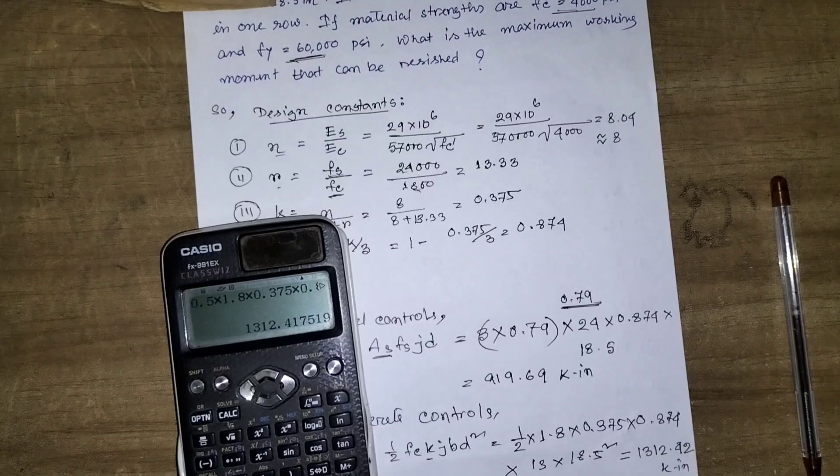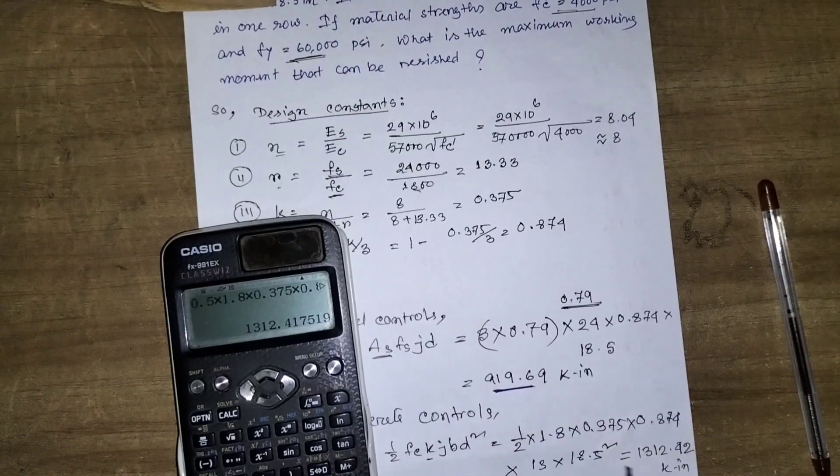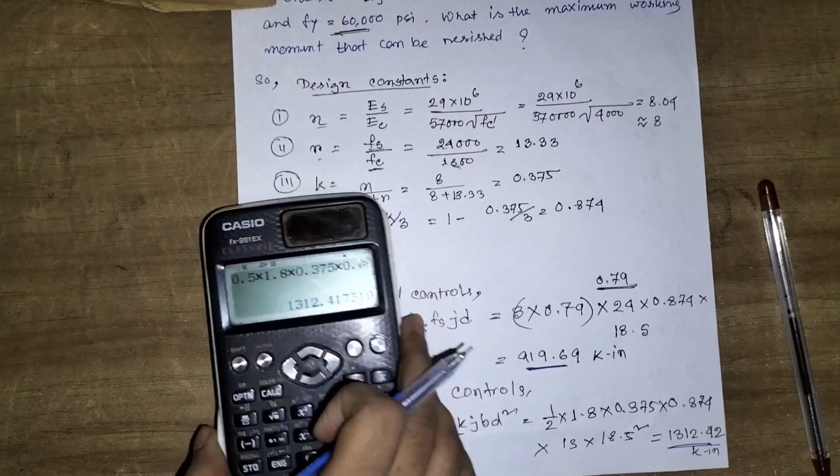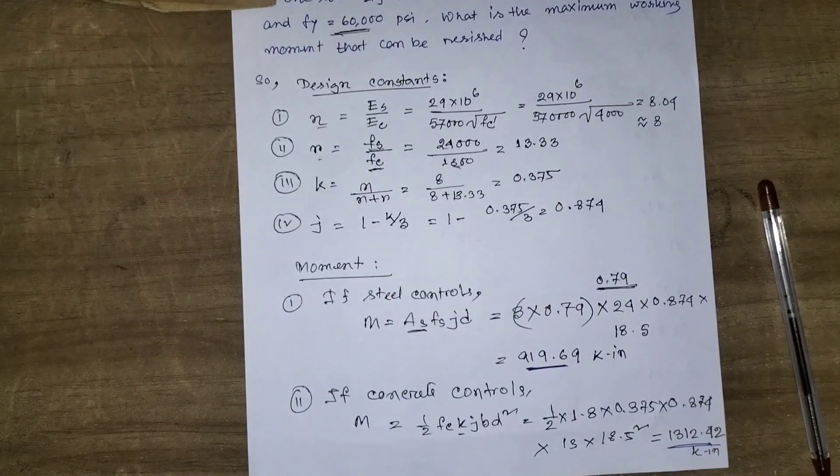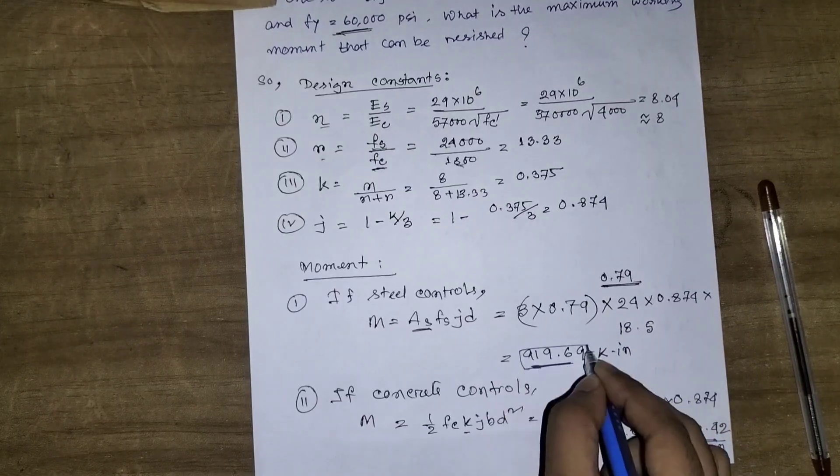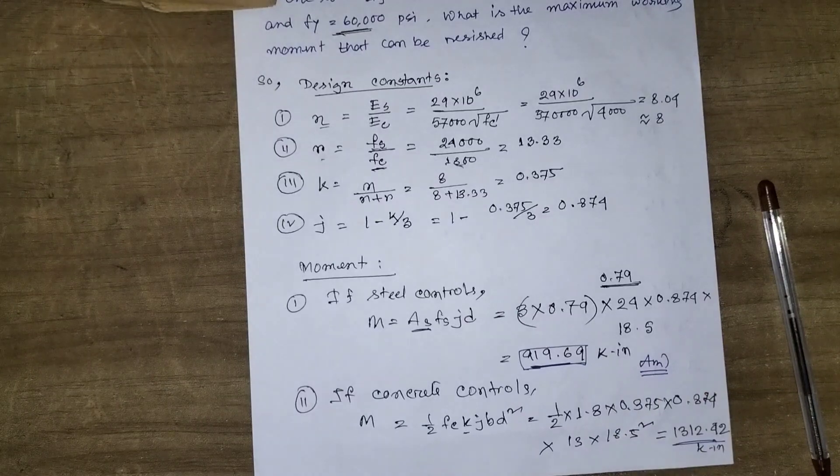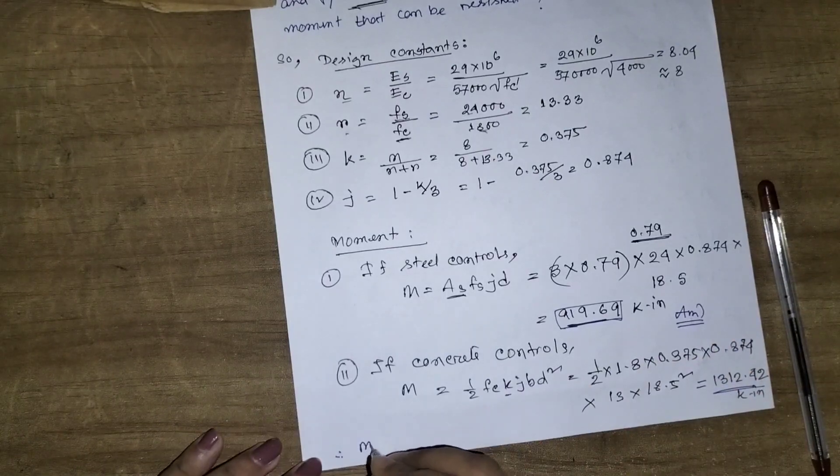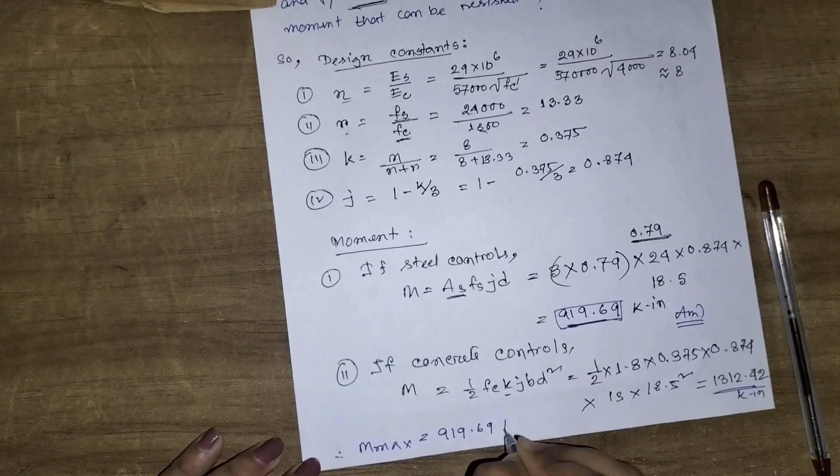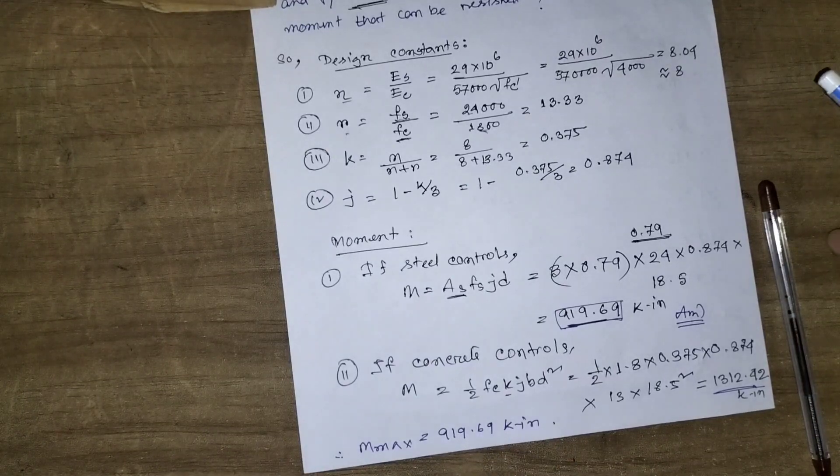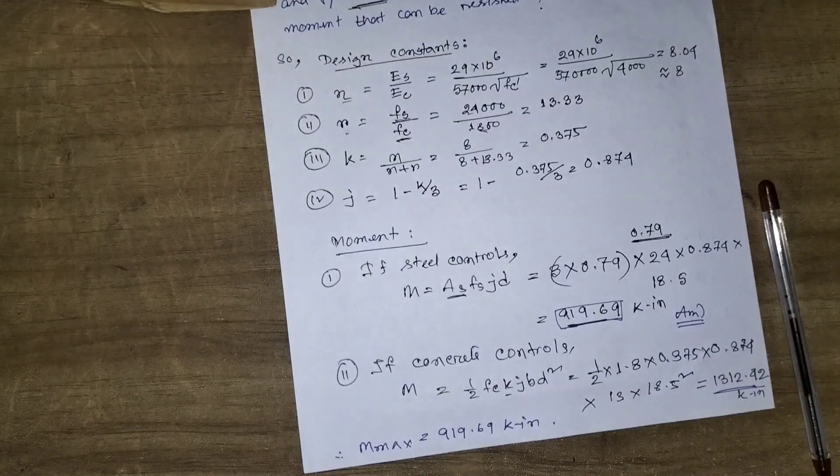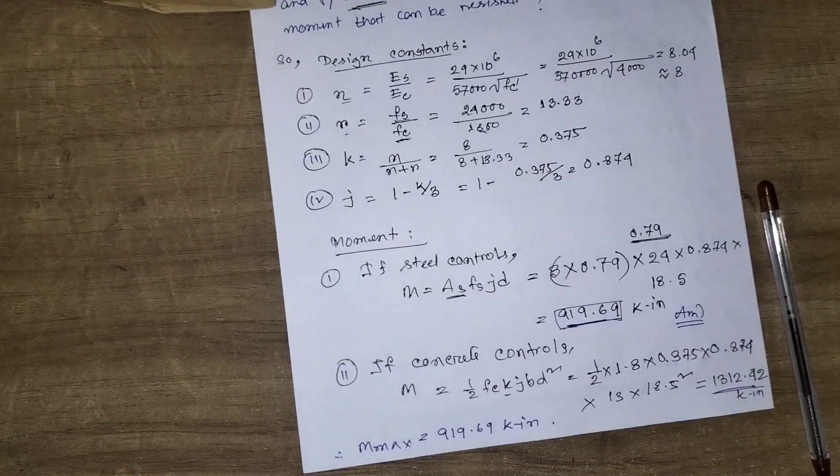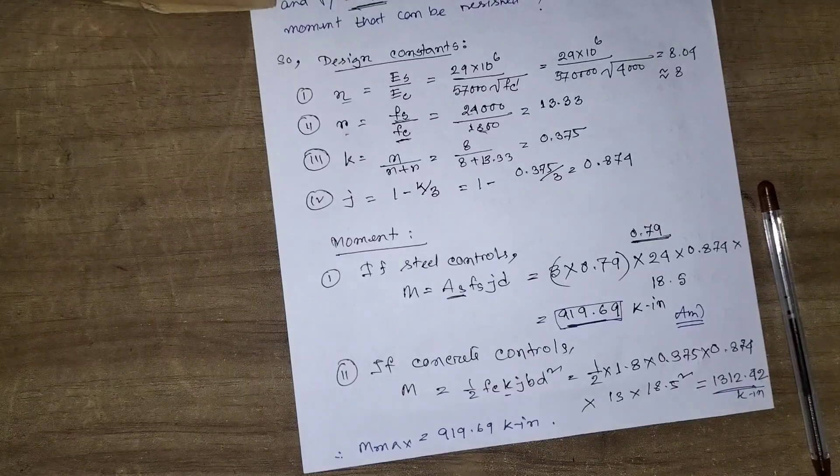So the answer would be the maximum moment, which is 919 kip-inches, controlled by steel. That's all for today. In my next video I will discuss singly reinforced beam analysis using USD method. So till then stay connected, and if you like this video please don't forget to like, share, and subscribe.